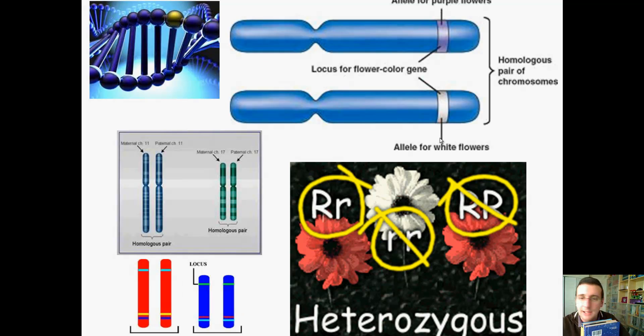Now, in this case, the allele or the version of the gene is saying you need to be white. And so now you have two versions. Is this flower going to be purple or is it going to be white? Well, it depends on whether purple or white speak louder. And that's the idea that we're talking about.